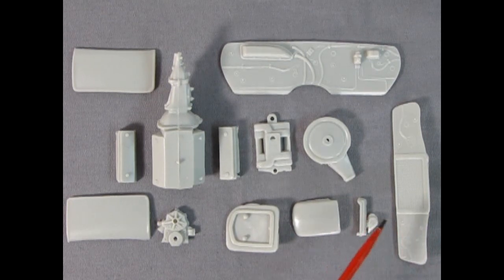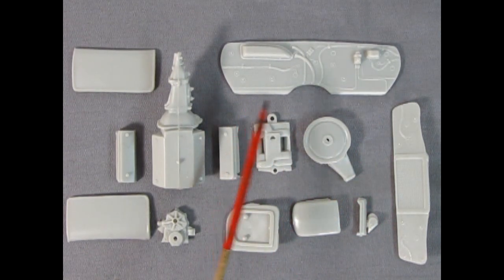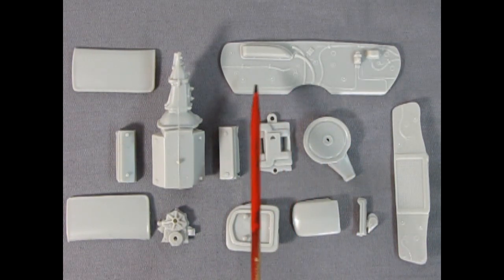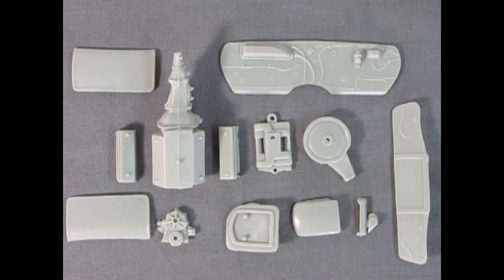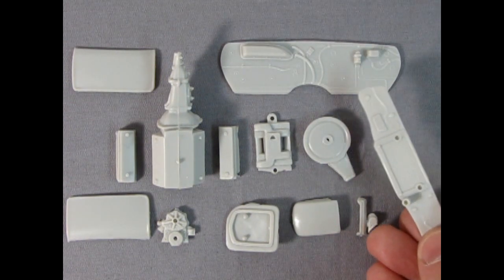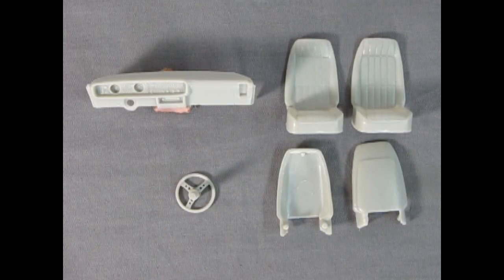And then here we have our radiator as well as the radiator wall and our firewall. Again I do believe the best detailed pieces on this are the firewall and our rad support and radiator. If you turn this over you can also see the great detail on the back side.